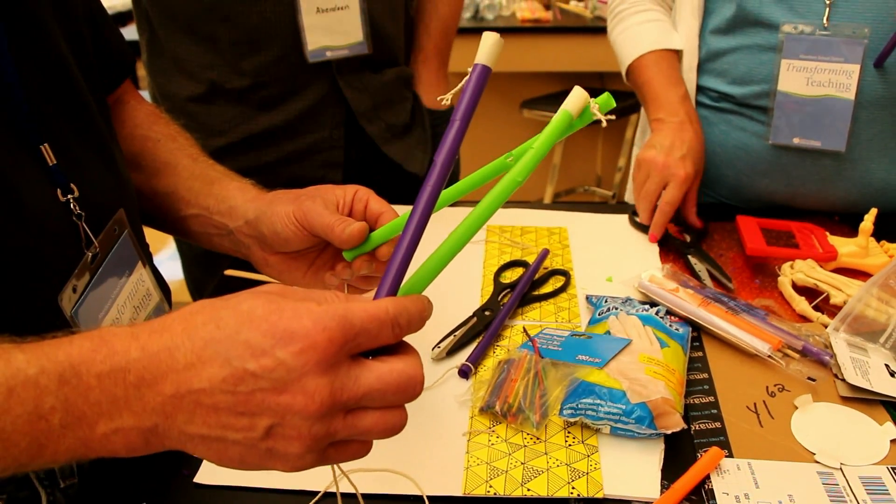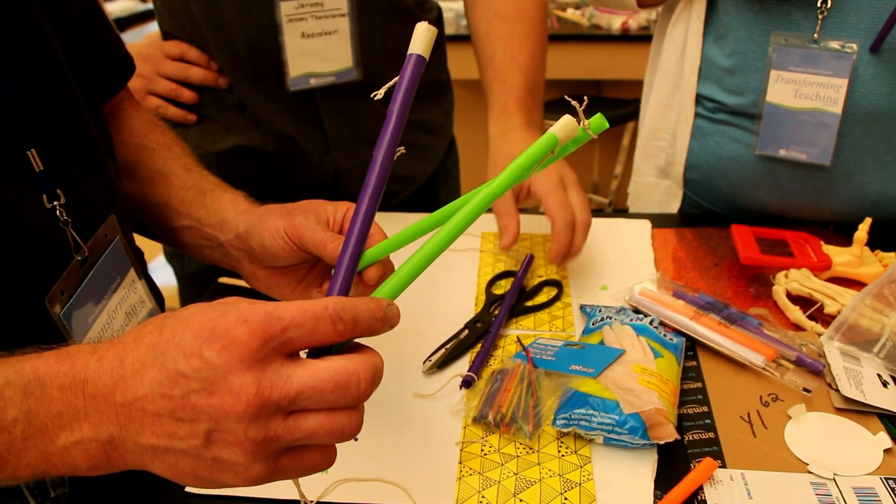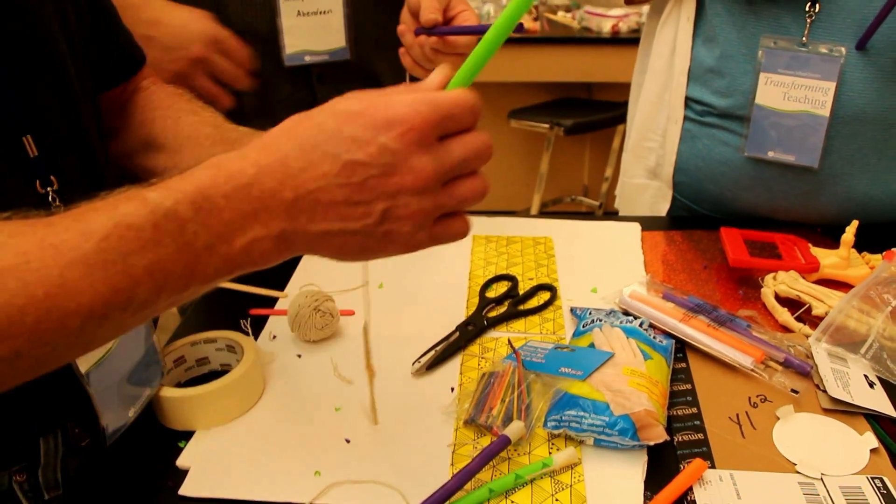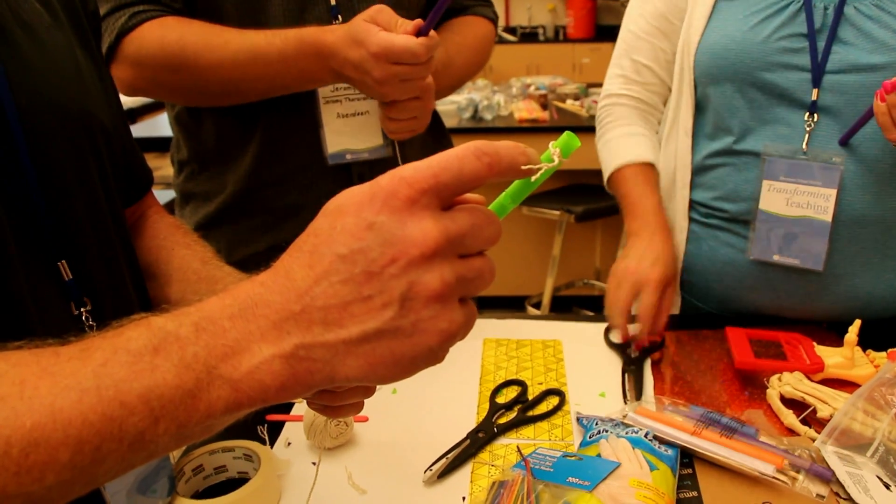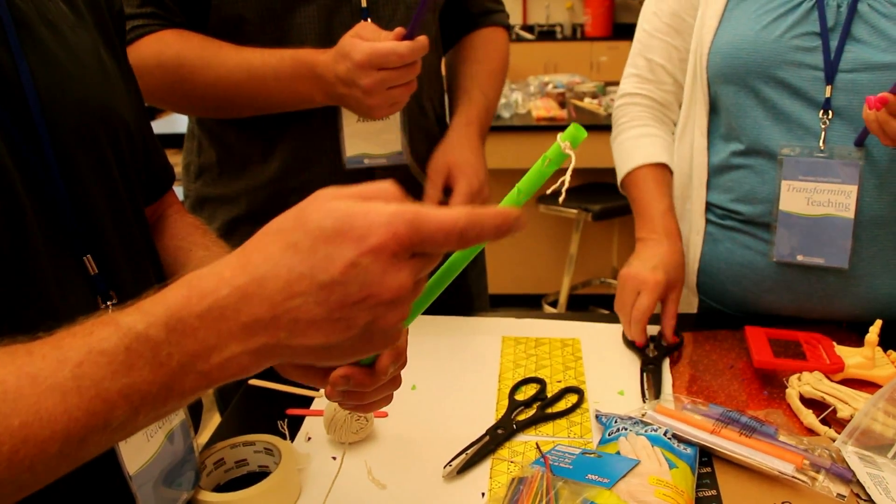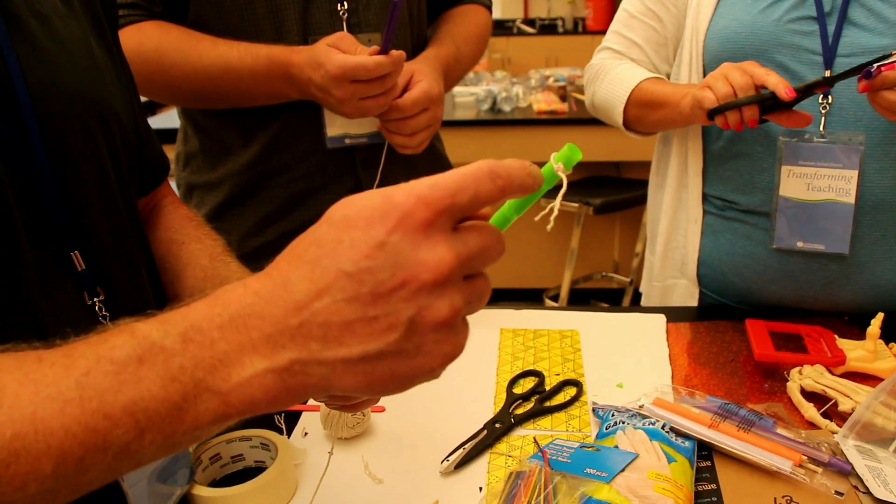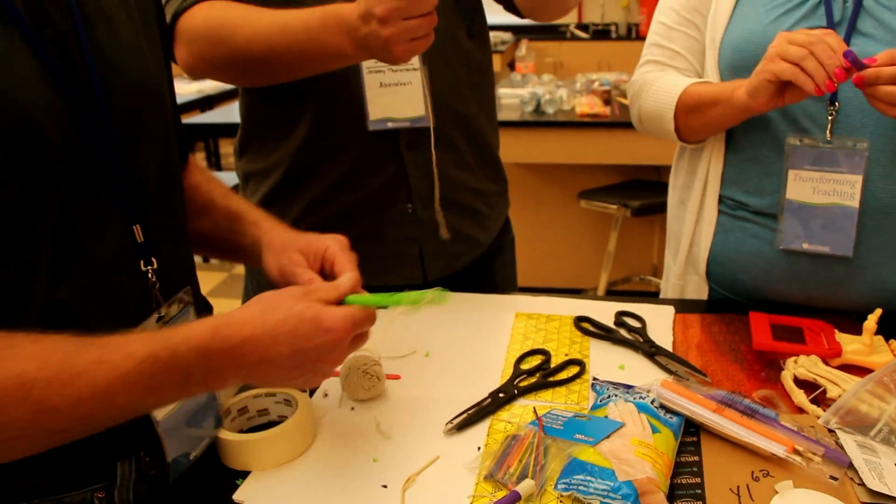We came up with the original idea here, and then as a group we decided it was sort of working, but when he would pull on it, it would go in different directions. It bent the opposite of where I expected it to be. So we put the strings, the knot, on the same side as the joints, and then we notched out these joints, and now it works much better.